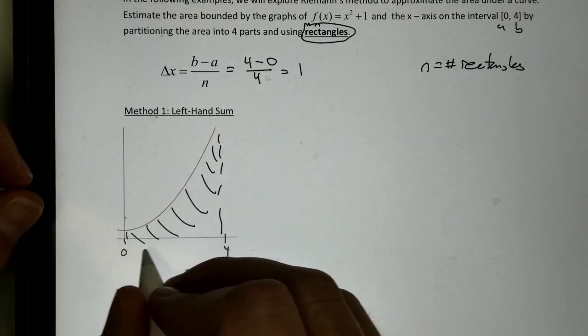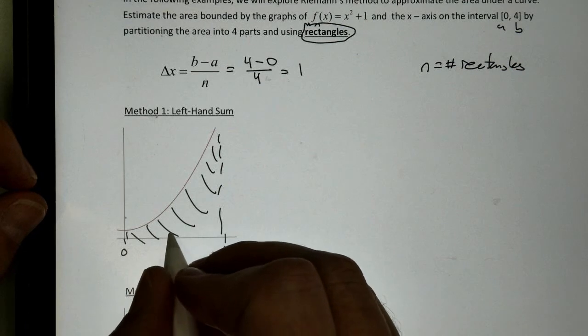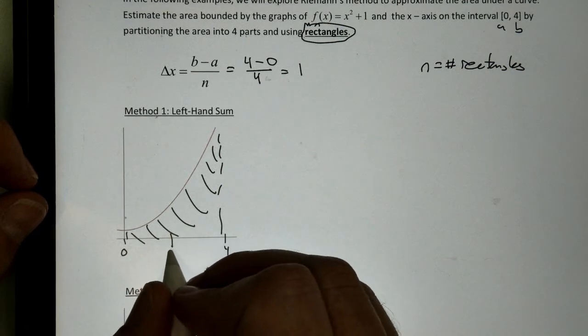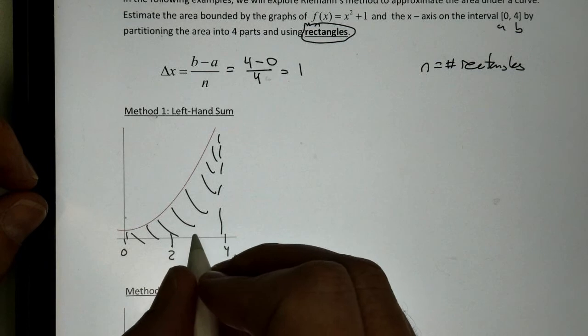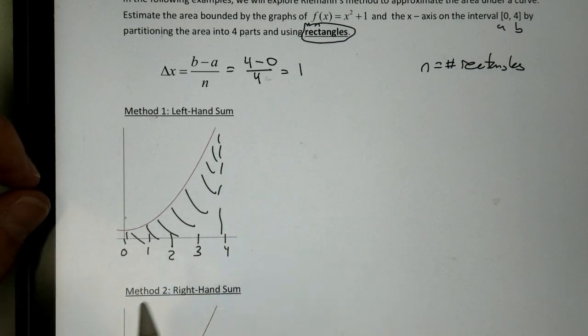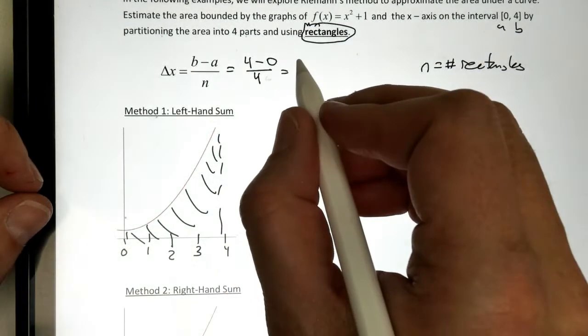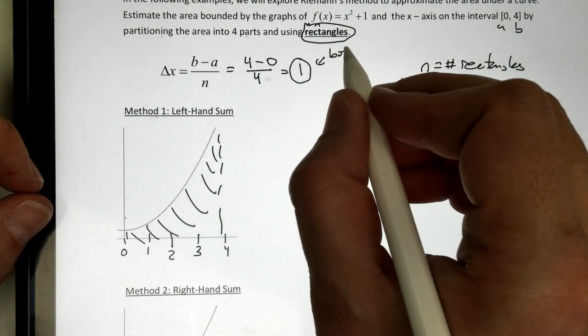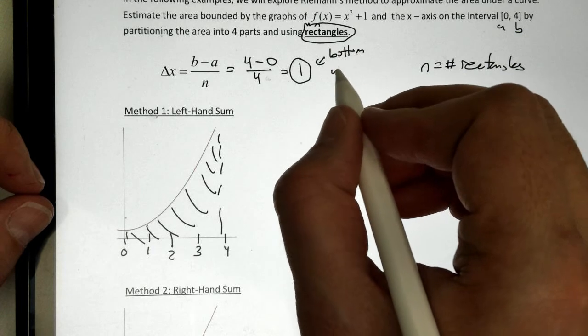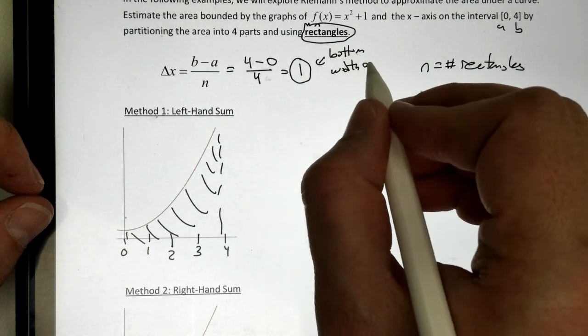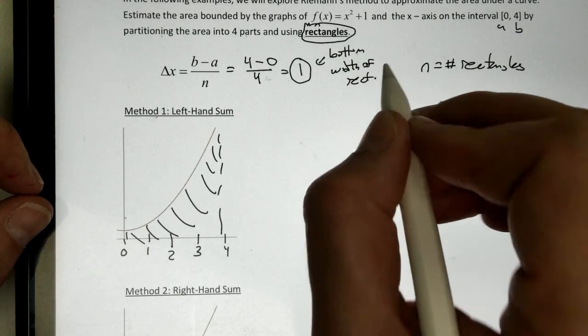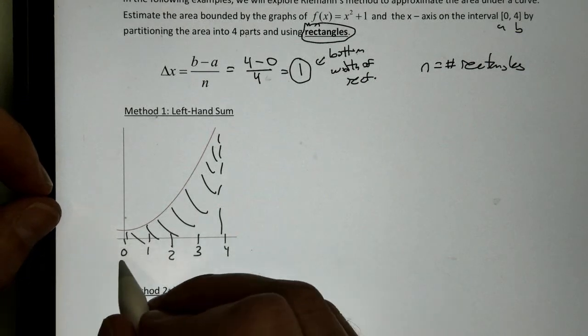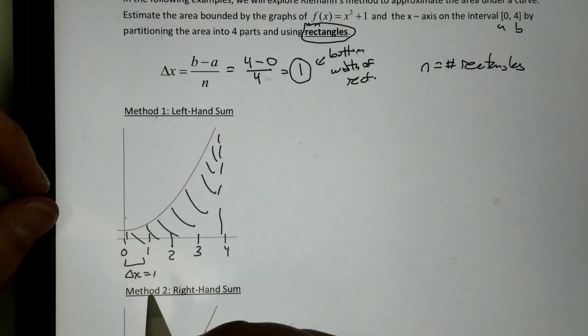In other words, if I can break up the region 0 to 4, break it up a little bit, I can make these little rectangles. 2 is going to be in the middle, 3, and 1. Remember, we are going to make the width, the bottom width of our rectangles, 1 here. So, the bottom width of our rectangle is going to be 1. Each one of these is going to be delta x, which is just 1.